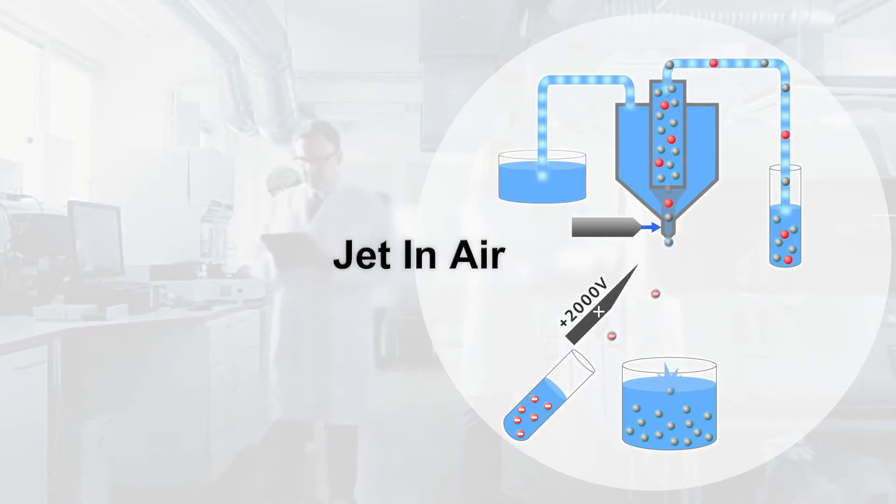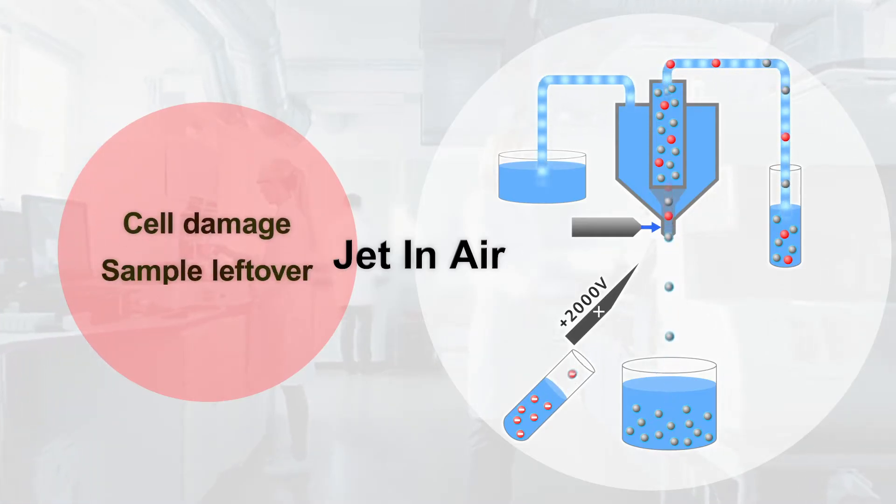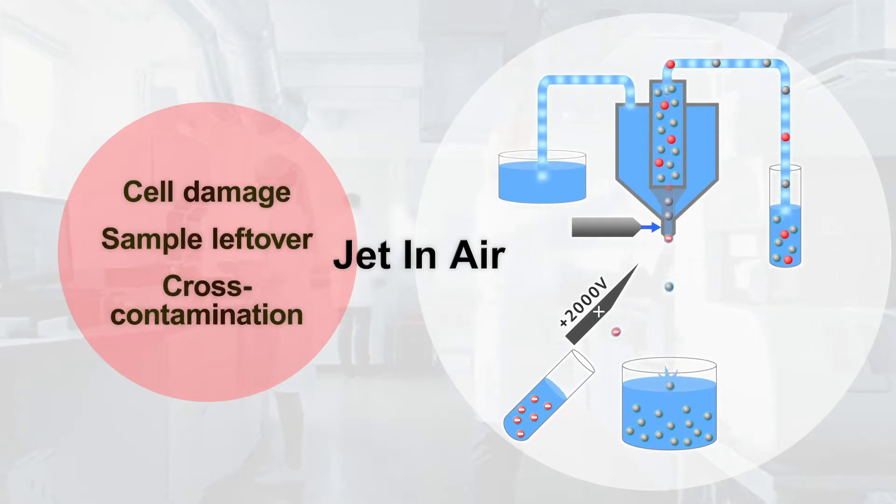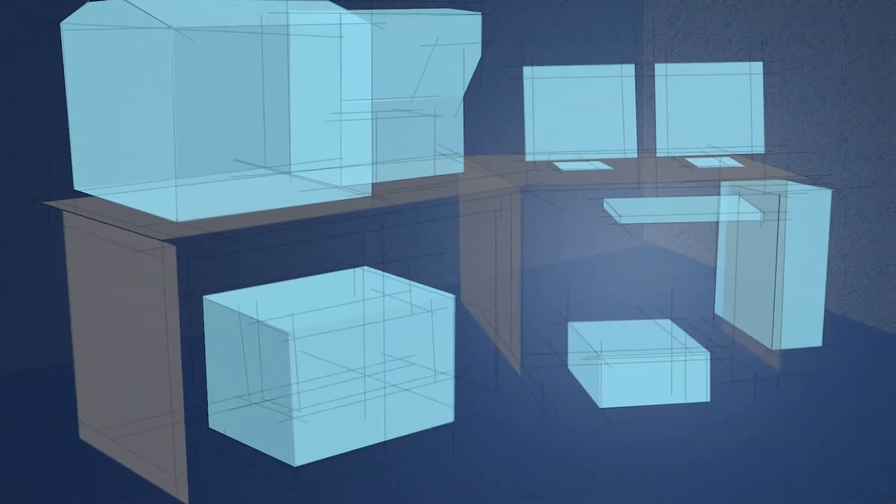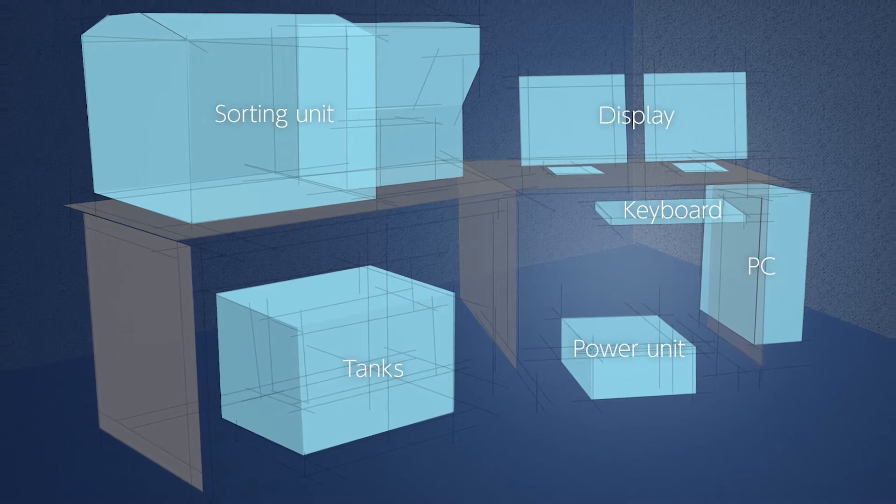Conventional cell sorters can form large numbers of droplets and separate cells at high speed, but they can damage cells during sorting. Because of the long and complex fluidic system, the entire sample cannot be measured, and there is also a likelihood of cross-contamination. Furthermore, conventional sorters are large and require specialized knowledge and training.